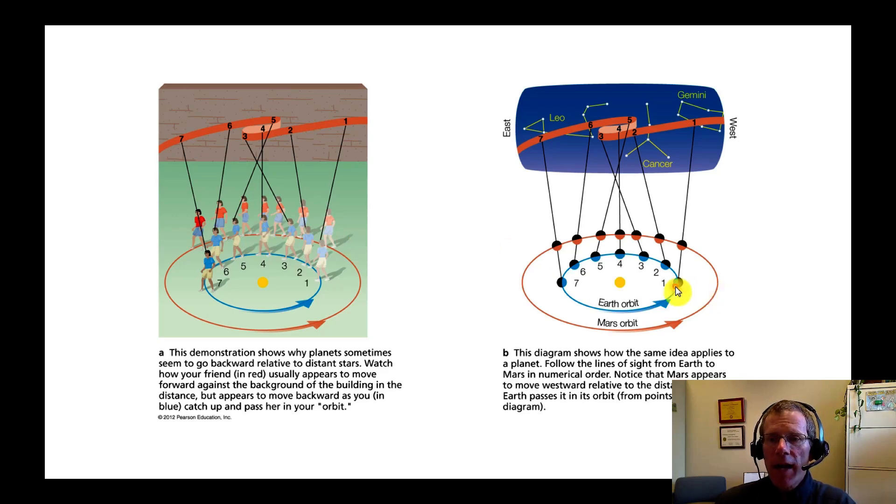Here's that same diagram, but with planets instead. And instead of a wall in the background, here we are with the constellations in the background. So right here, the outer planet appears to be moving backwards on the border between the constellation Cancer and Leo. And thank you for watching that. If you need to watch it again, slow it down, feel free to do so.